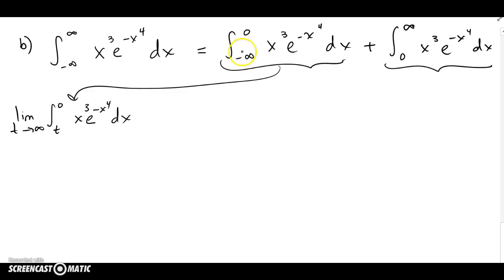Okay, so let's look at the left half. Replace the negative infinity with t. And let's not forget, it says t goes to negative infinity. And analyze this integral. It looks like, gives you almost a feel like it's by parts because it's a polynomial and an exponential.